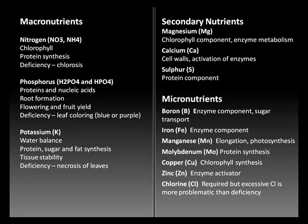Secondary nutrients include magnesium, calcium, and sulfur, which have important roles in plants. There is also an array of micronutrients: boron, iron, manganese, molybdenum, copper, zinc, and chloride. A very tiny amount of chloride is required, but excessive chloride is toxic to plants — so the amount plants are exposed to is critical, as any more than a trace amount is likely to be toxic.